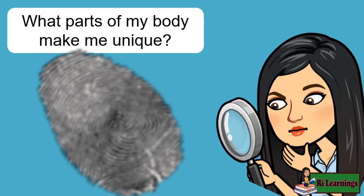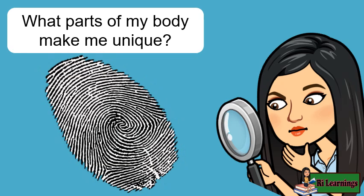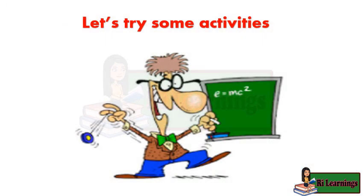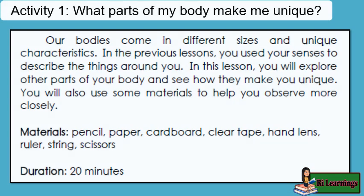What parts of my body make me unique? Look at your hands, your fingers, and your thumbs. Did you know that your fingers have patterns that are uniquely yours? Activity 1: Our bodies come in different sizes and unique characteristics. In the previous lessons, you used your senses to describe the things around you. In this lesson, you will explore other parts of your body and see how they make you unique. You will also use some materials to help you observe more closely.